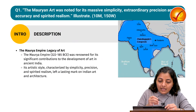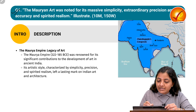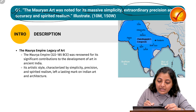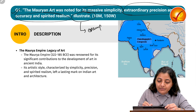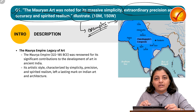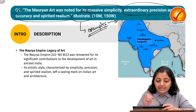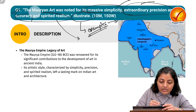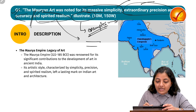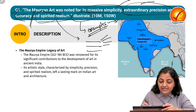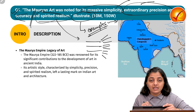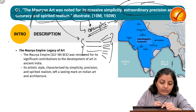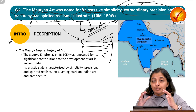The first question states that Mauryan art was noted for its massive simplicity, extraordinary precision and accuracy, and spirited realism. We need to illustrate — meaning give examples — across these three dimensions to substantiate our answer and fulfill the demand of the question.